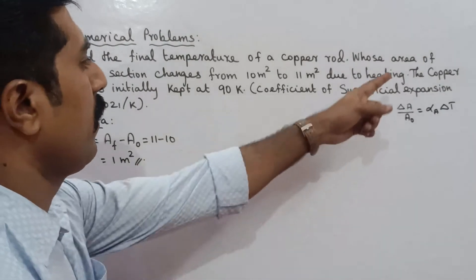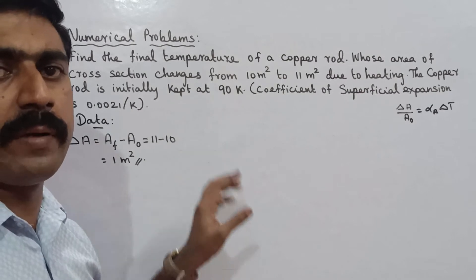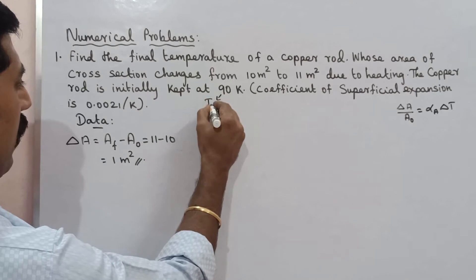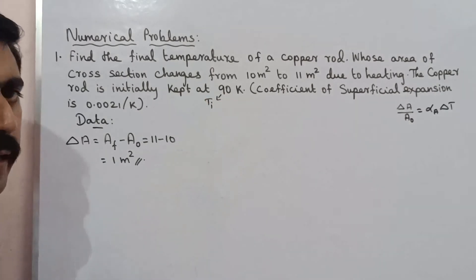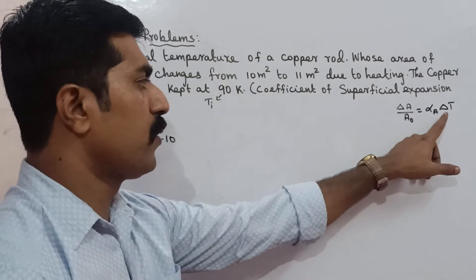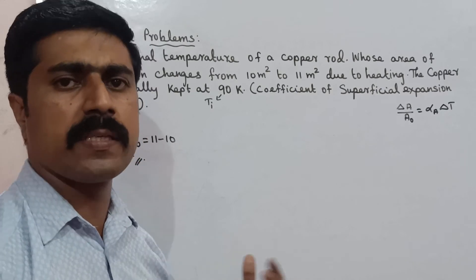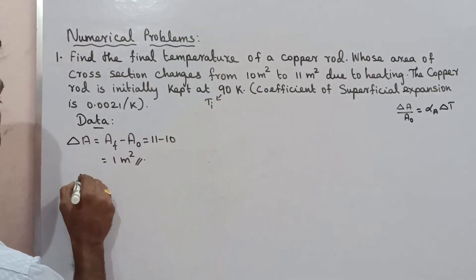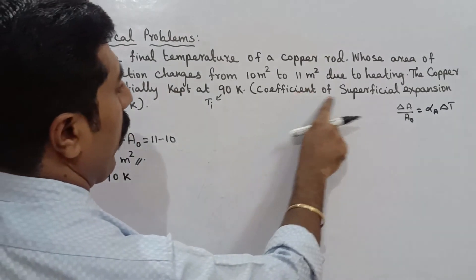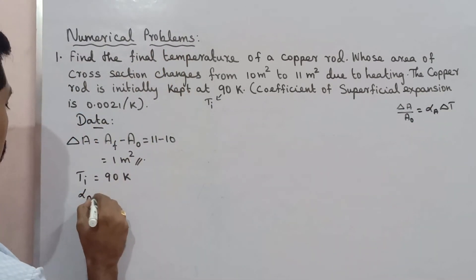So delta-A is 1 m². Next, the copper rod is initially kept at 90 Kelvin, so the initial temperature Ti is given as 90 Kelvin. The final temperature Tf is what we need to find. The change in temperature delta-T equals final temperature minus initial temperature. The coefficient of superficial expansion alpha-A is given as 0.0021 per Kelvin.